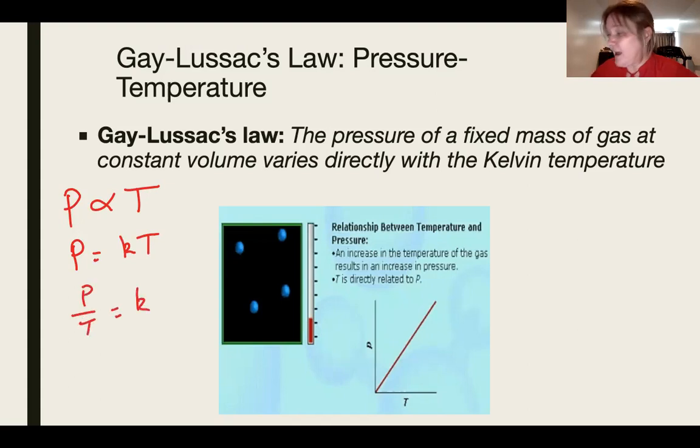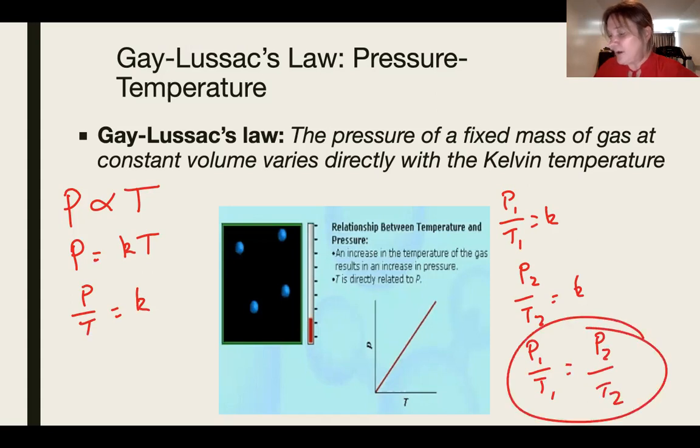And then, of course, if we have P1 over T1 equals K and P2 over T2 equals K, therefore we have P1 over T1 equals P2 over T2. And that is Gay-Lussac's law.